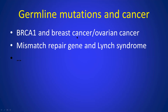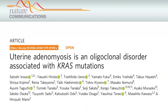We also have germline mutations in cancer — for example, BRCA1. Breast cancer and ovarian cancer are also intimately linked, but also adenomyosis. Just last year, there was a paper reporting that in adenomyosis, there are also cancer driver mutations — specifically KRAS.